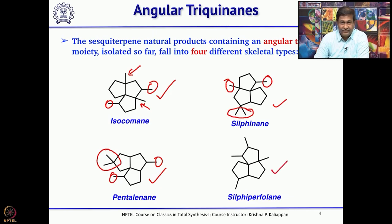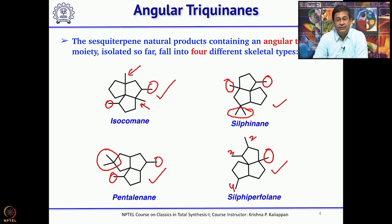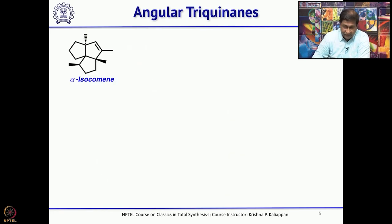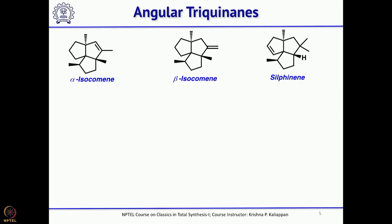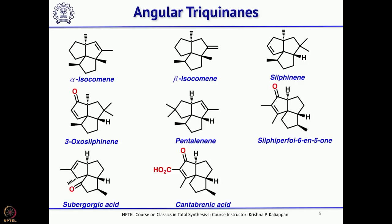For silphiperfolane-type angular triquinines, there is only 1 angular methyl group and the remaining 3 methyl groups are attached to tertiary carbon atoms. There are many angular triquinines: alpha-isocomane, beta-isocomane, silphenene, and so on. We will try to cover total synthesis of some of them. Each group would have used different key reactions to make these natural products, so while discussing various total syntheses of triquinines, you will get an idea of how such molecules can be synthesized using different key reactions and strategies.